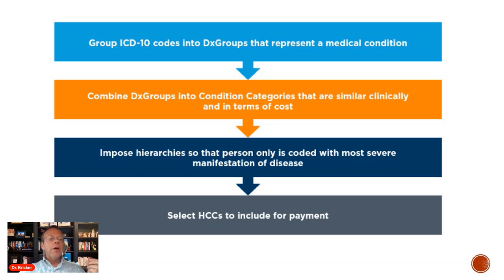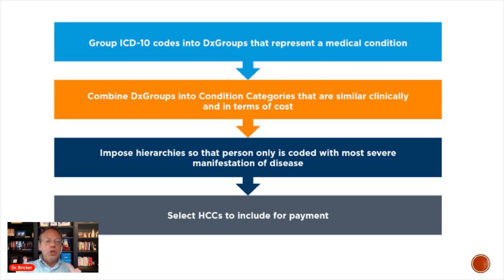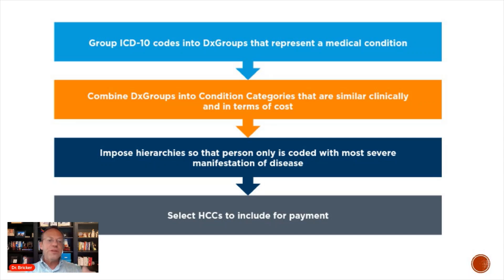Hierarchies are imposed on those condition categories so that a person is only coded with the most severe manifestation of disease. For example, when looking at a person's ICD-10 diagnosis codes, there could be a code for diabetes without complications and one for diabetes with complications for the same person. Because ICD-10 codes can be applied loosely in practice, in that situation only the diabetes with complications code is used, and those HCCs are then included for payment.